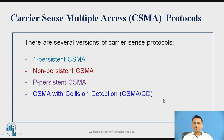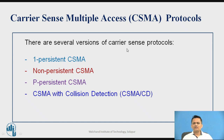The basic drawback of Aloha and slotted Aloha is that data is transmitted randomly, which still risks collision. The solution is an enhanced approach called CSMA — Carrier Sense Multiple Access. Here, you sense the carrier by listening to the channel to check whether somebody is already transmitting. If somebody is transmitting, you should not transmit, as it will cause collision. If the carrier is idle, only then do you transmit. This is the basic concept of CSMA.